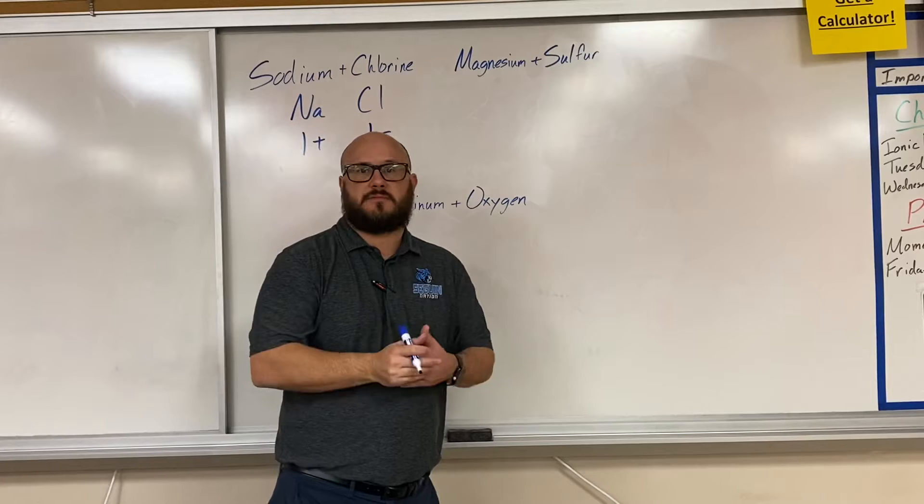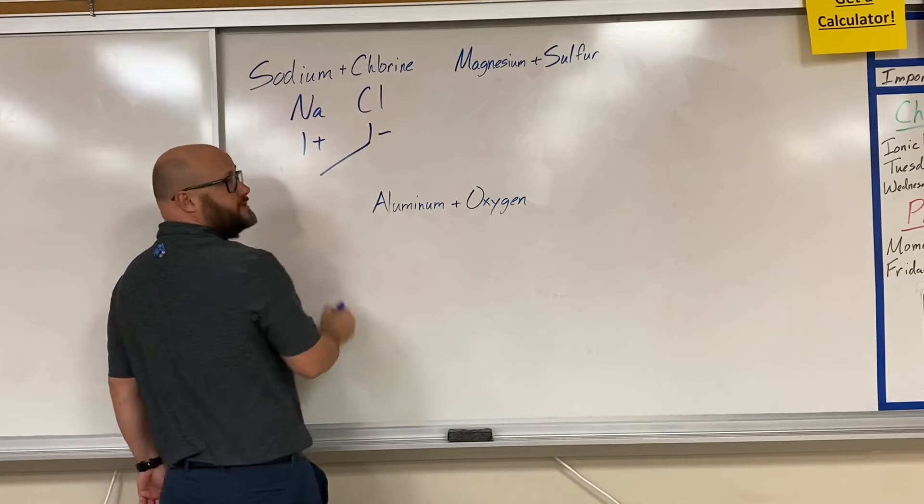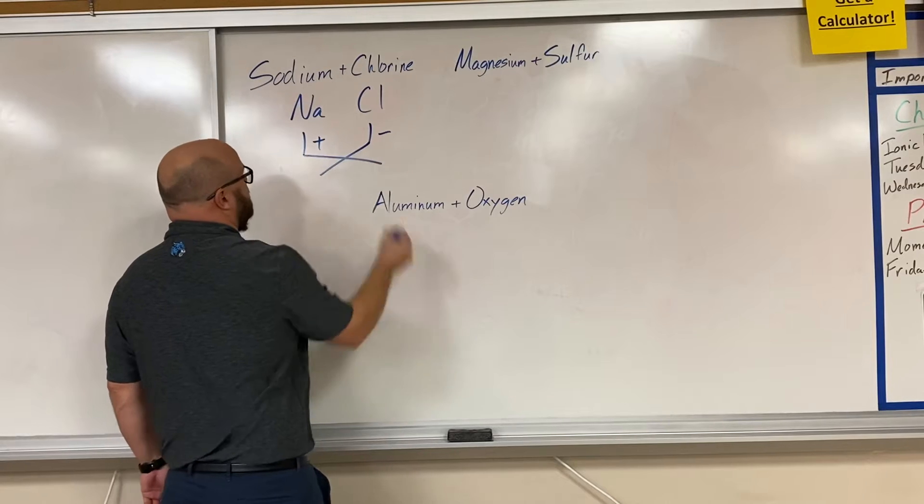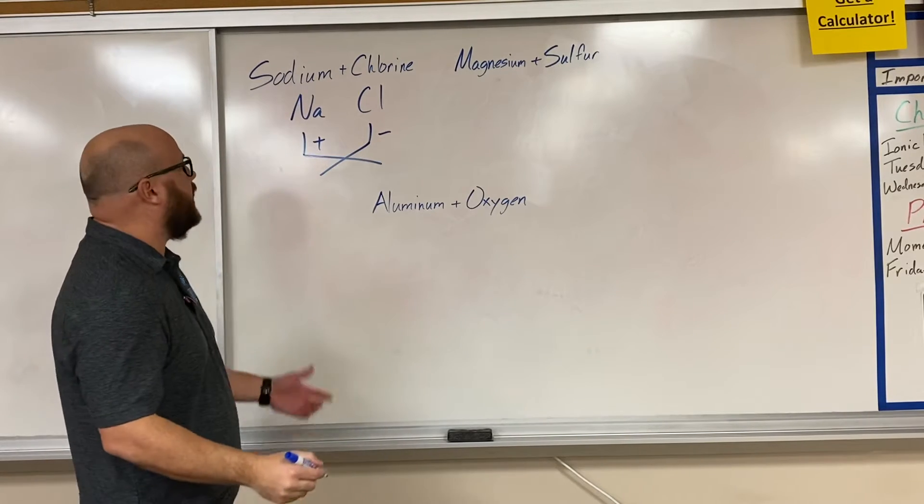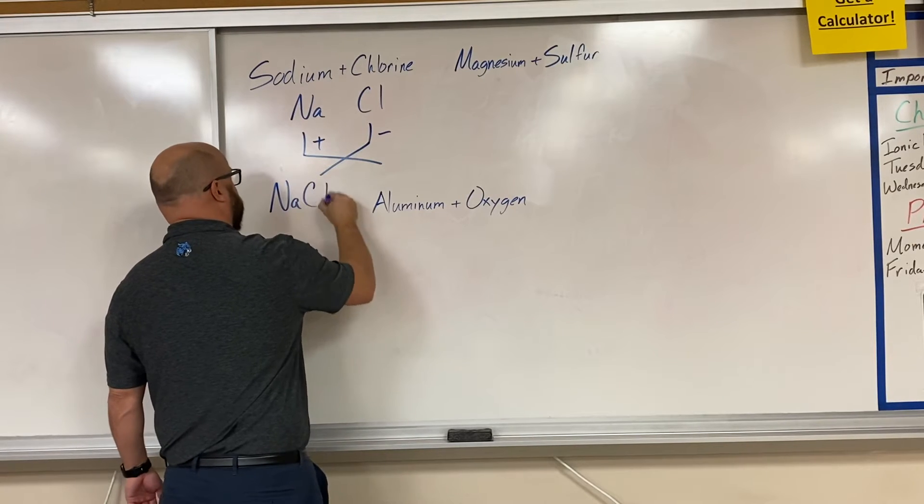And then lastly, you criss-cross applesauce. This one goes to sodium, this one goes to chlorine. Our final compound formula is simply NaCl.